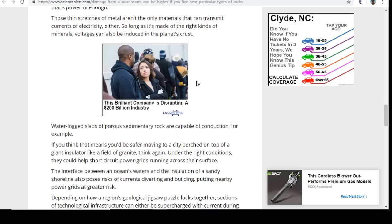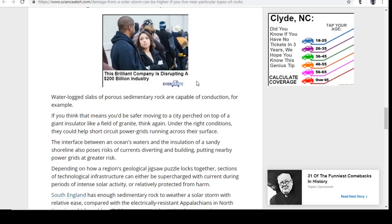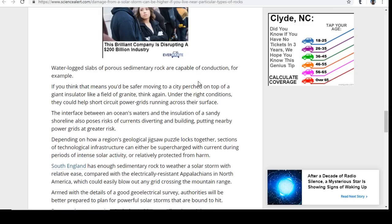So long as it's made of the right kinds of minerals, voltages can be induced in the planet's crust. Waterlogged slabs of porous sedimentary rock are capable of conduction. If you think that means you're safer moving to a city perched on top of a giant insulator like a field of granite, think again. Under the right conditions, they could help short-circuit power grids running across their surface. The interface between the ocean's waters and the insulation of a sandy shoreline also poses risks of currents diverting and building, putting nearby power grids at greater risk.